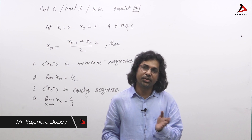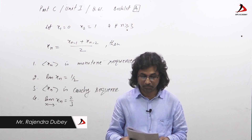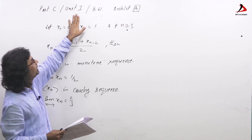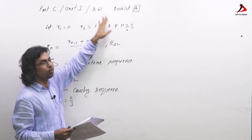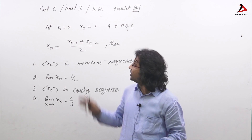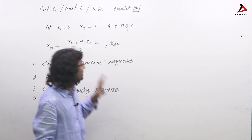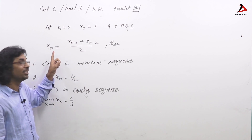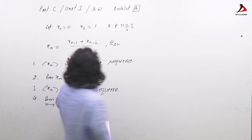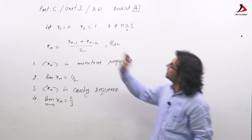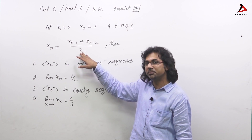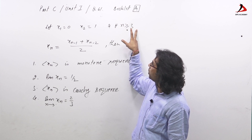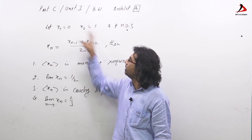Hi guys, in continuation of providing solutions for the exam CSI NET, this is question part C, Unit 1, question number 61, booklet A. This is a very fundamental question on sequences. The question gives a recurrence relation where the first and second terms are given, and for terms from the third onward, the terms are defined by this relation.